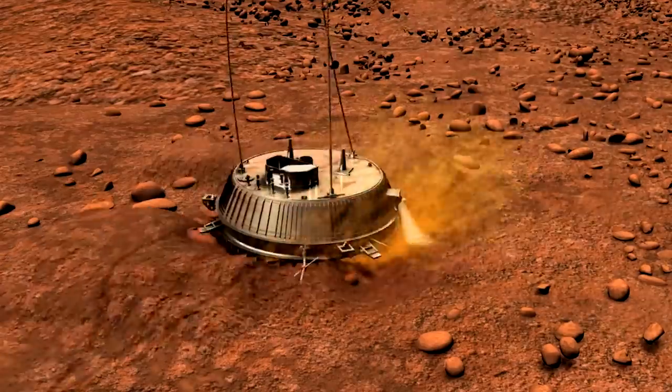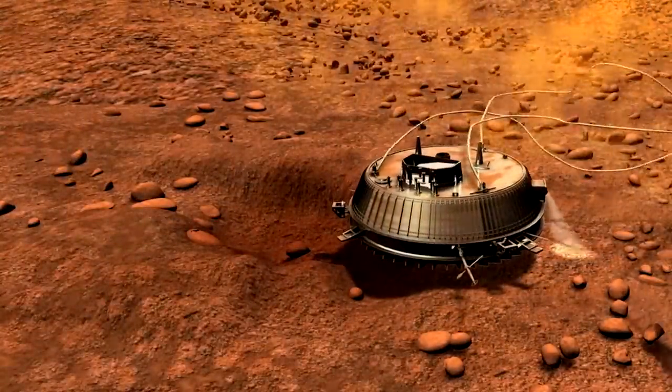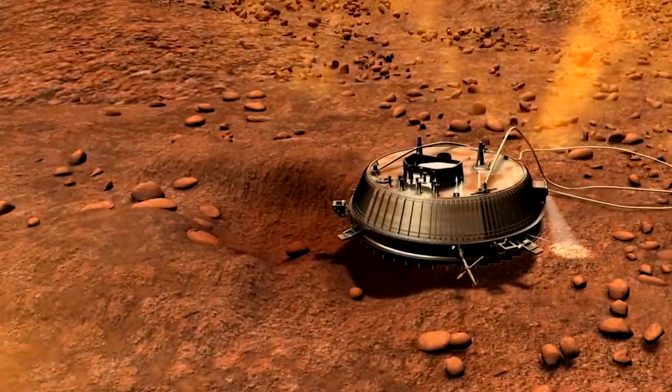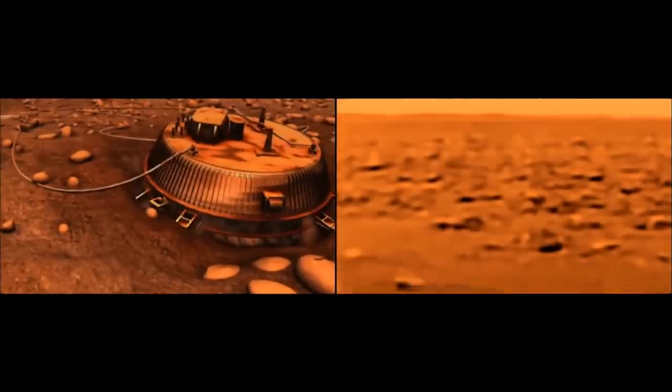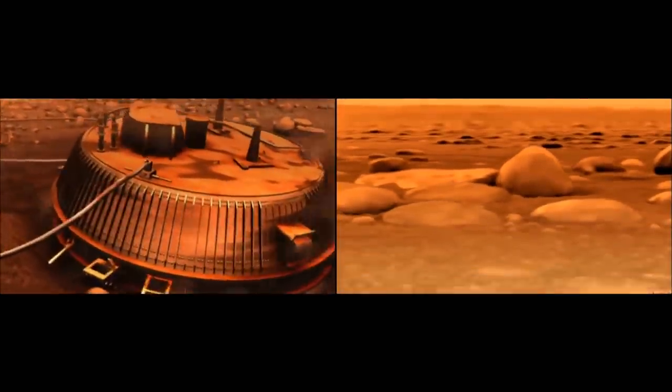The rounded stones seen in front of Huygens' camera are strikingly similar to river stones on Earth that are shaped by flowing water. Scientists believe the landing site is covered by liquid methane during seasonal rains.